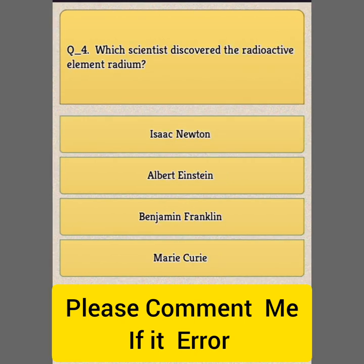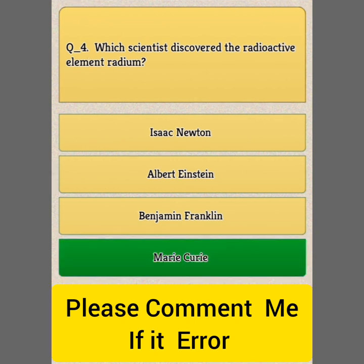Question Number 4: Which scientist discovered the radioactive element radium? Option A: Isaac Newton. Option B: Albert Einstein. Option C: Benjamin Franklin. Option D: Marie Curie. Answer: Option D, Marie Curie.